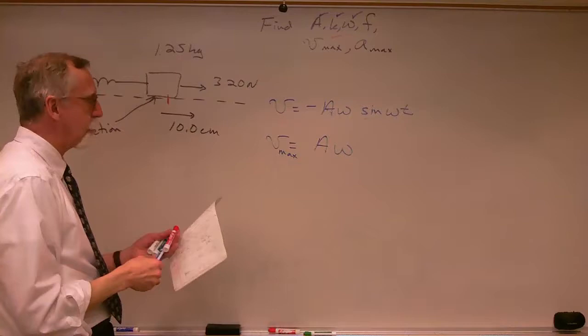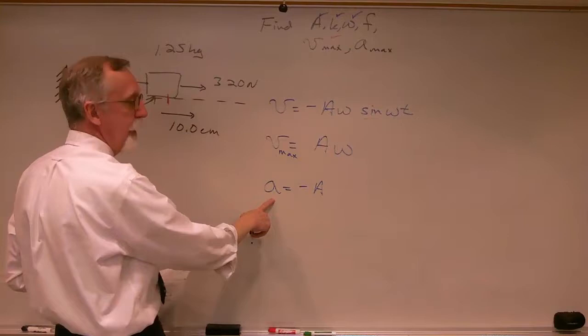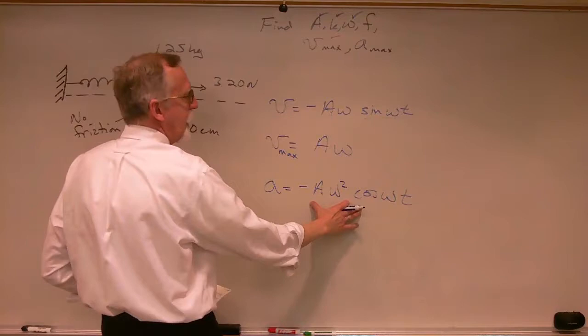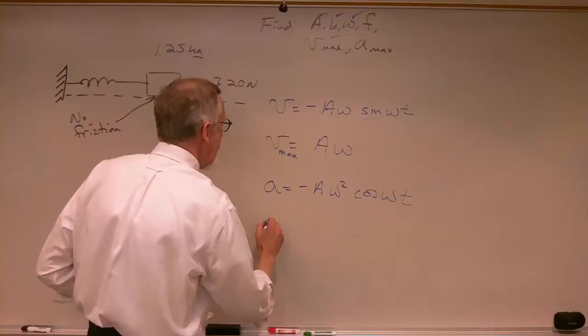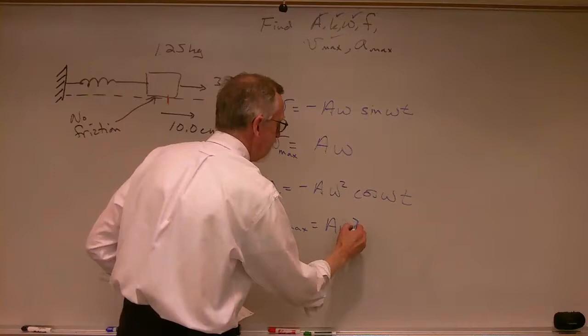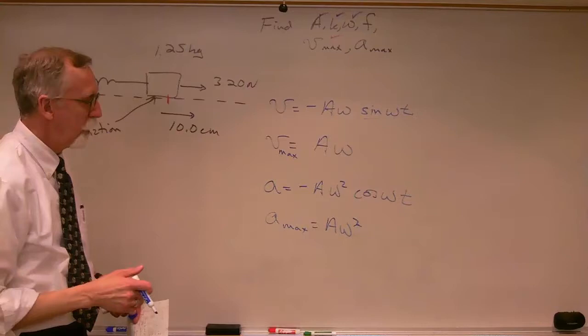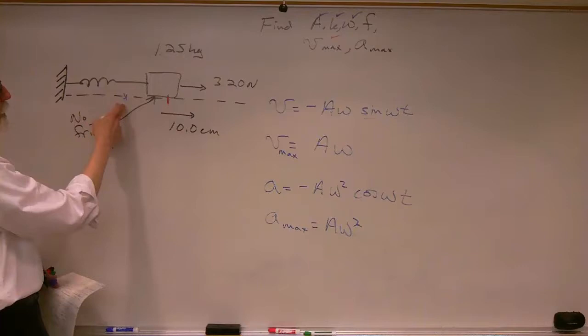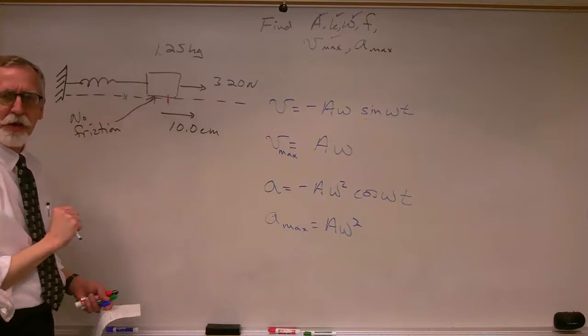What about a max? The acceleration is minus big A omega squared cosine omega t. Cosine oscillates from plus one to minus one, so the maximum acceleration occurs when cosine omega t equals negative one, giving a max equals A omega squared. That's when the object is at its most negative position, x equals minus A.